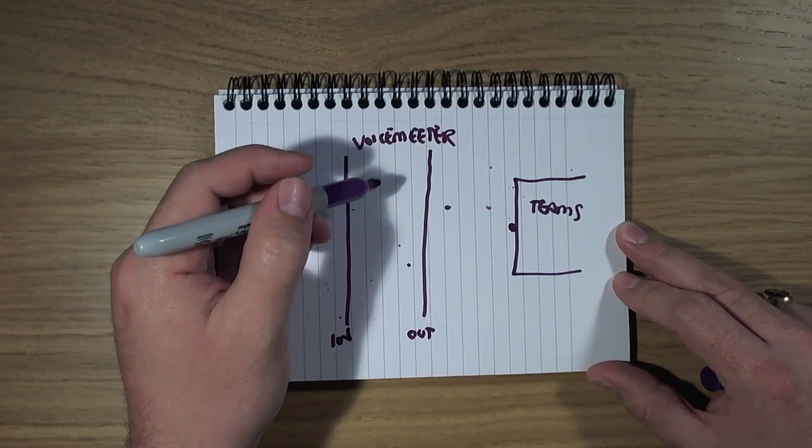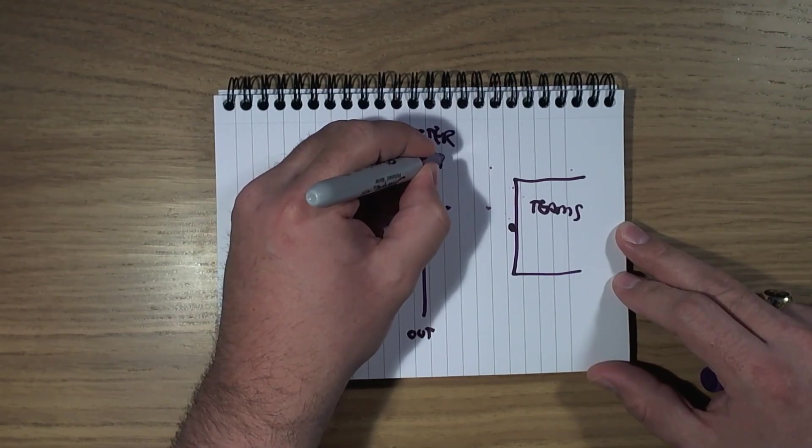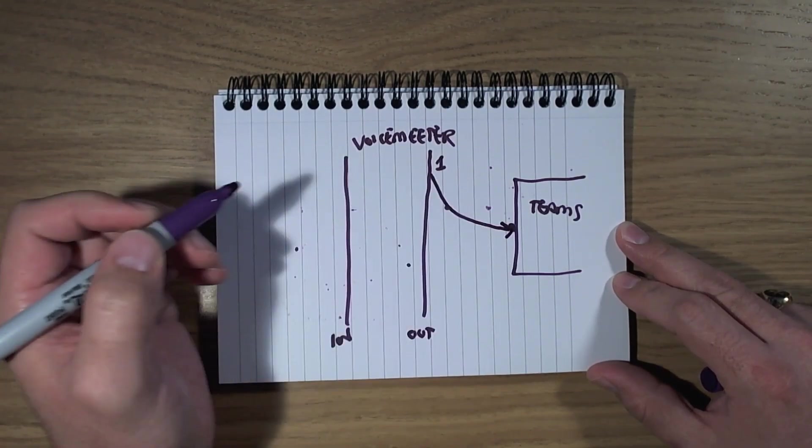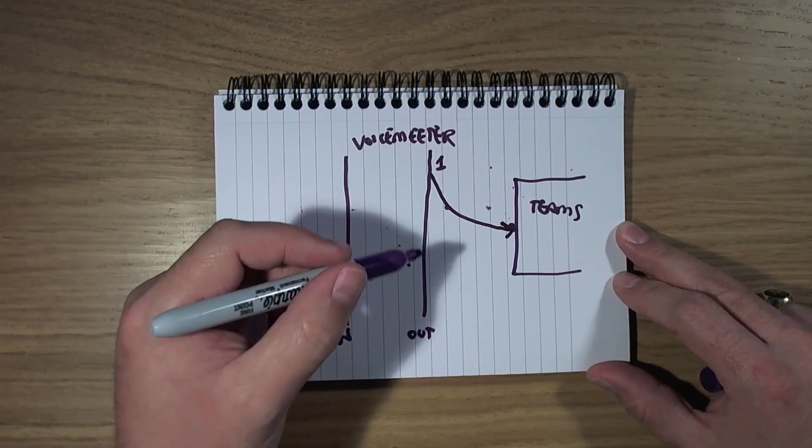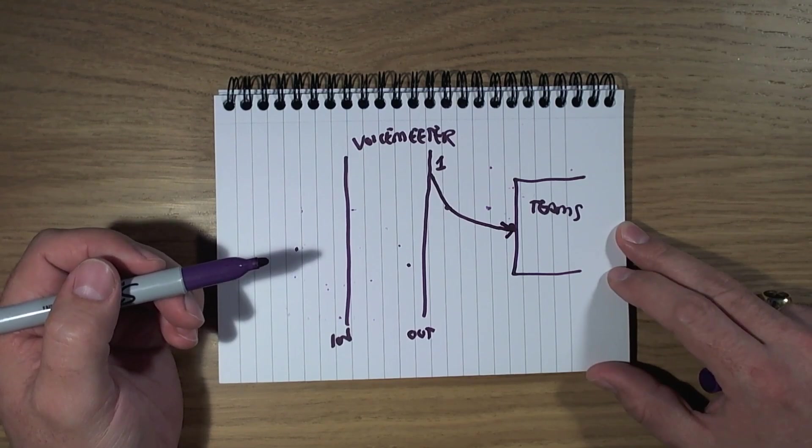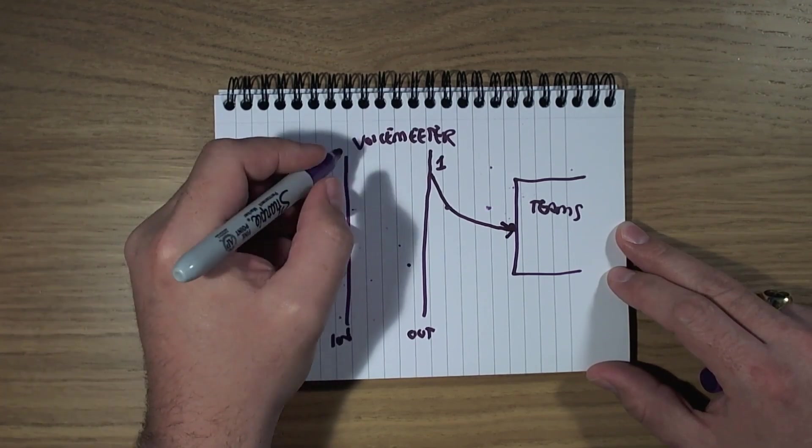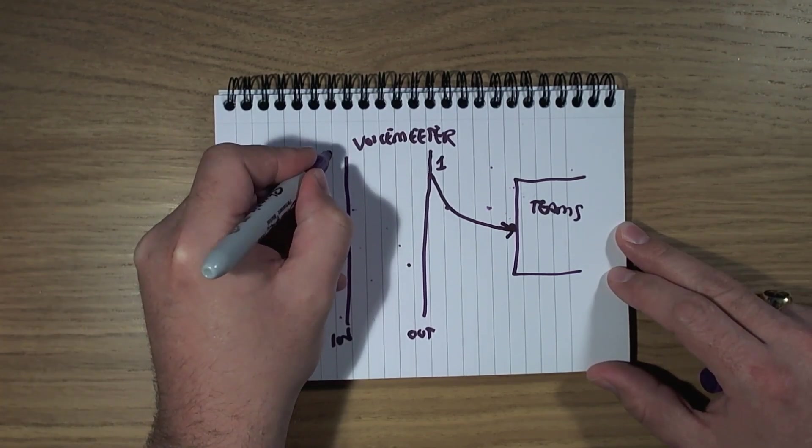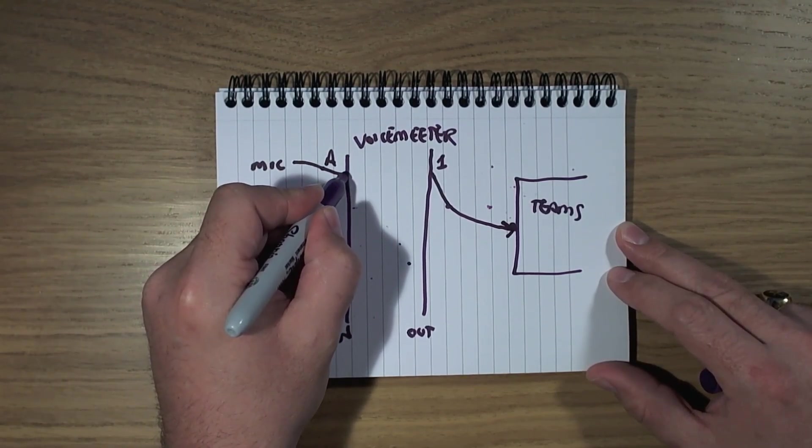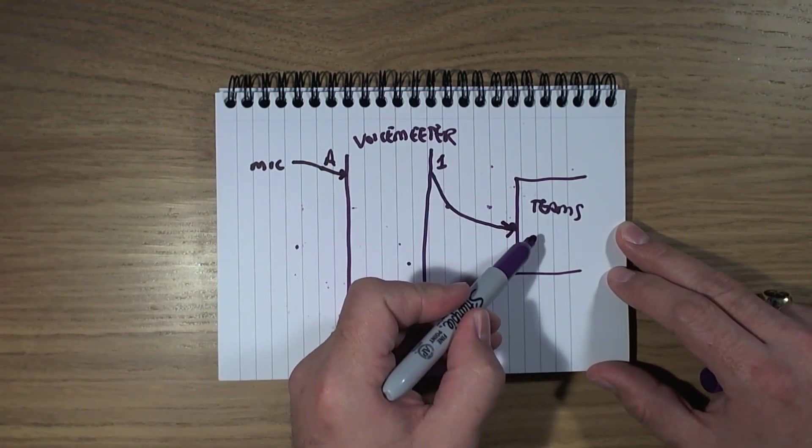And what we can say is that we're going to connect one of the outputs, let's call it Output 1. We're going to take that from VoiceMeter, and we're going to use that as the input for Teams. So VoiceMeter's Output 1 is going to be the input for Microsoft Teams, instead of our microphone. And what we're going to say over here is our microphone goes into, let's say it's input A over on VoiceMeter. So our microphone goes in to input A, and VoiceMeter's Output 1 is going to go to Teams.